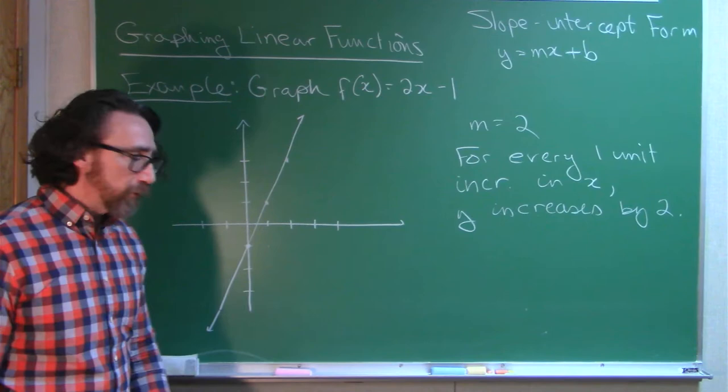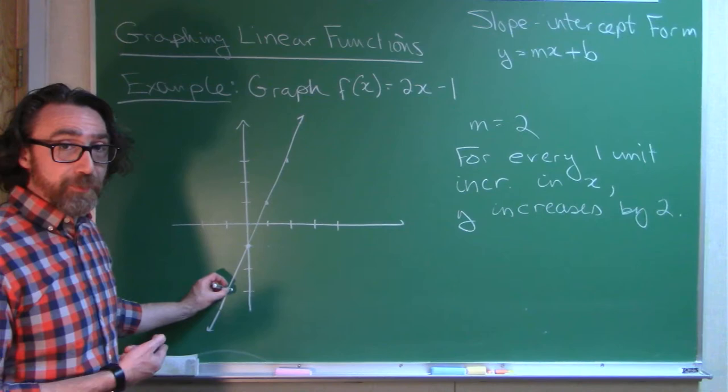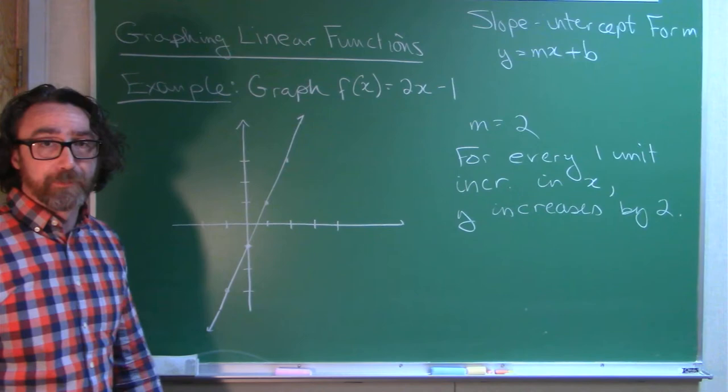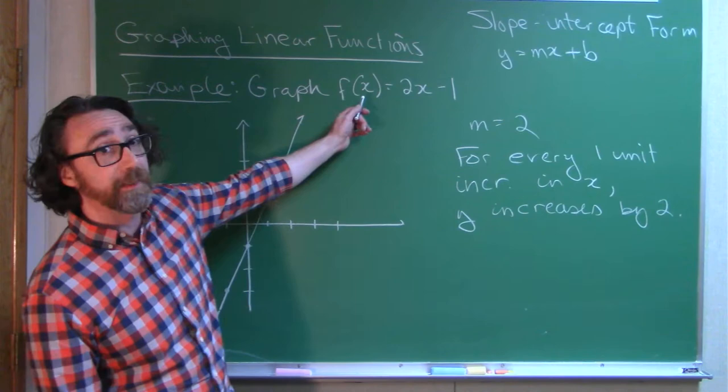And, once again, very useful. I didn't plot this point before. I can look at my graph and see the point (-1, -3) is on the graph. That means negative 1 comes in, negative 3 comes out.